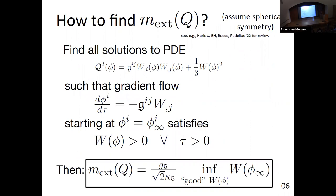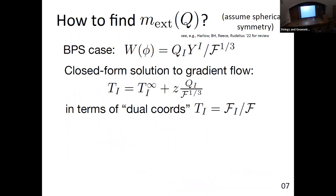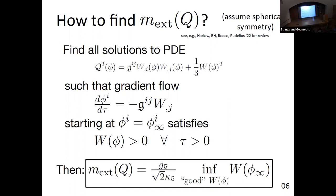How do we find the mass of extremal black holes? We need to solve a PDE and look for a solution such that the gradient flow has the nice property that W stays positive — which is very constraining. Among all such solutions there might be more than one, but we look for the one with the smallest W, and that gives the extremality bound. In nice cases, which are very common, we can find W by finding a minimum of Q², giving the attractor point.